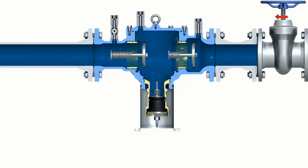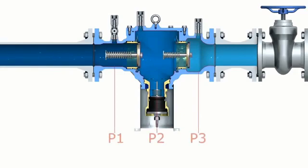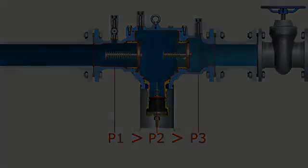If water consumption is stopped, the pressure on the outlet side rises again. The differential pressure between the middle zone and outlet zone drops, and the outlet check valve closes. At the same time, the differential pressure between the inlet zone and middle zone drops, which causes the inlet check valve to close. The backflow preventer is in shutoff position again.